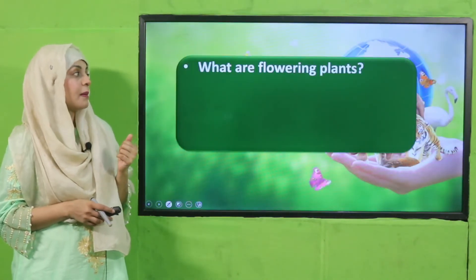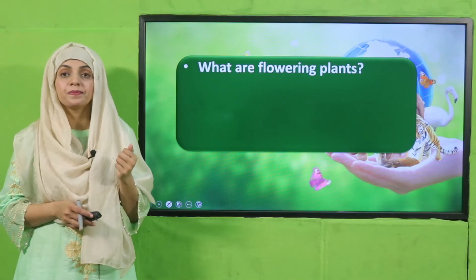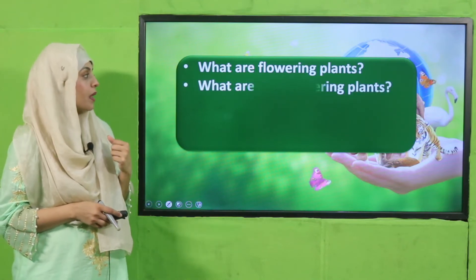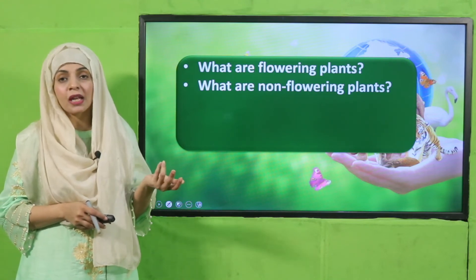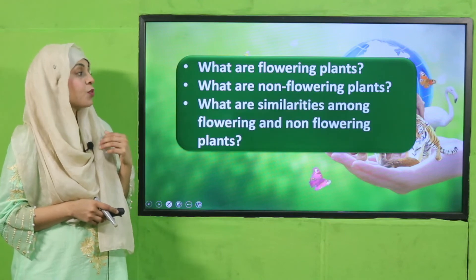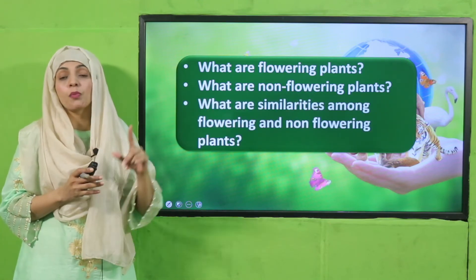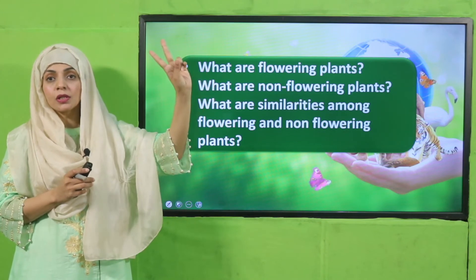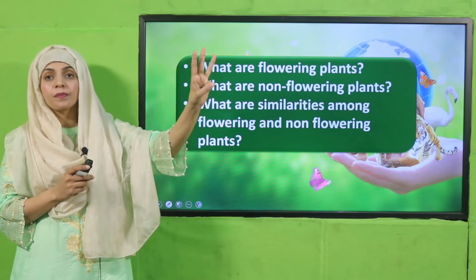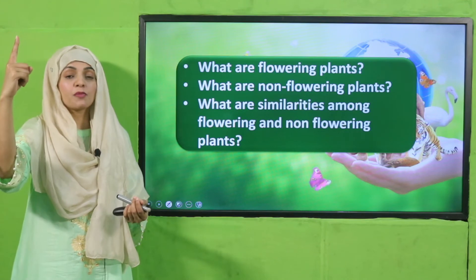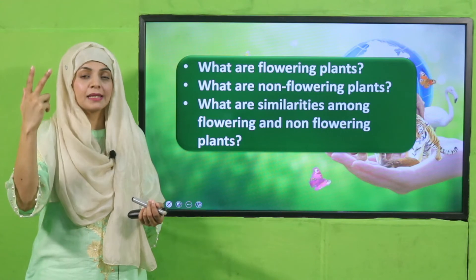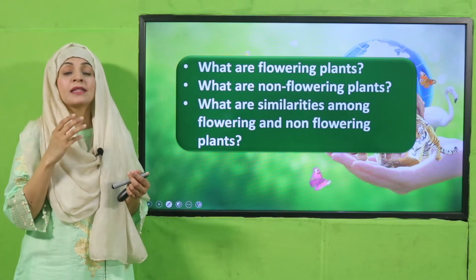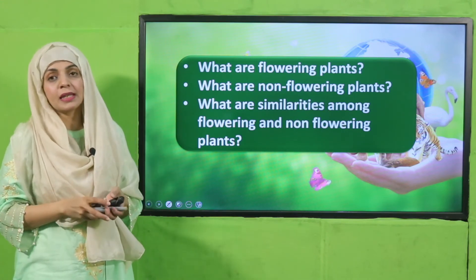Now is the time for evaluation. What are flowering plants? — Plants which bear flowers. What are non-flowering plants? — Plants which do not bear flowers at any stage of their life. What are the similarities among flowering and non-flowering plants? — Both have roots, stem, and leaves; both have photosynthesis process for making food; and both have seeds. Note that flowering plants always have seeds, but some non-flowering plants also have seeds.